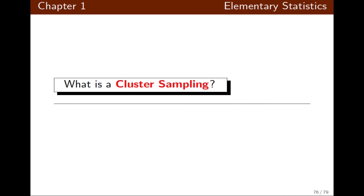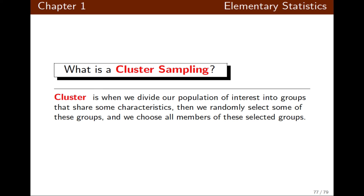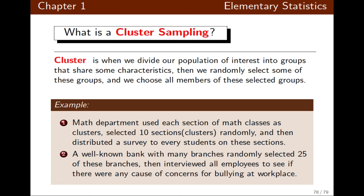The last sampling method is cluster sampling. Cluster sampling is similar to stratified — you divide into groups, but then select some of the groups and include every member of the selected groups in the survey. For example, if the math department wants to assess class performance and considers each section a cluster, with close to 200 sections they might select ten sections and distribute the survey to all students in those sections. Those are examples of cluster sampling.